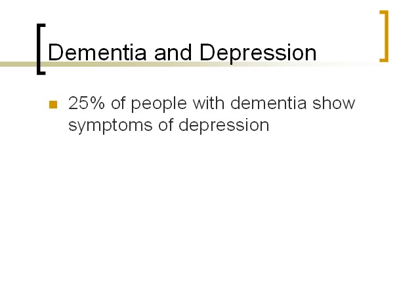There's also pseudo-dementia, which isn't a formal diagnosis but a clinical phenomenon where people with major depressive disorder have cognitive impairments that look like dementia. This can lead to over-diagnosis of dementia, especially in older adults who are actually just depressed. To distinguish pseudo-dementia from real dementia, you look for things like an uneven progression over weeks. An uneven stepwise progression is more suggestive of pseudo-dementia once strokes have been ruled out.